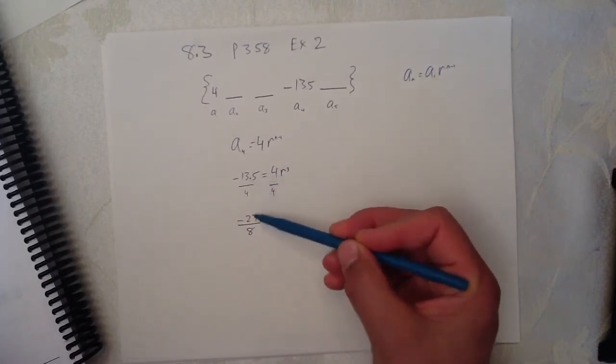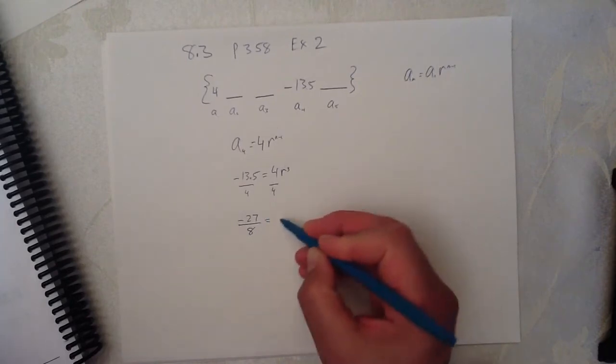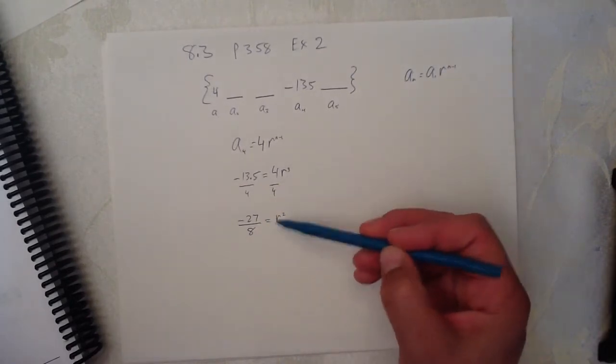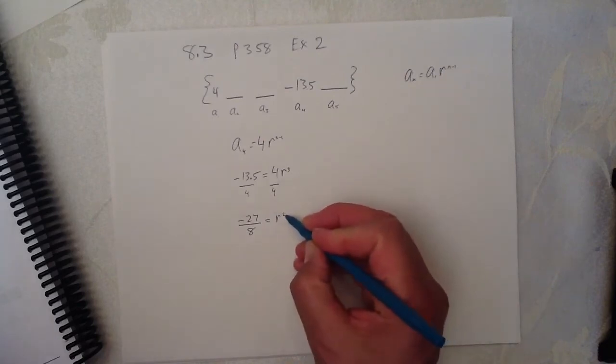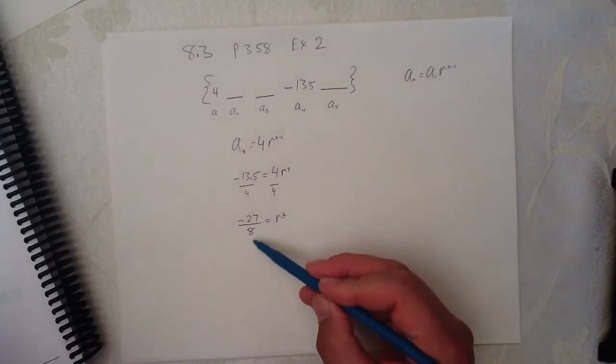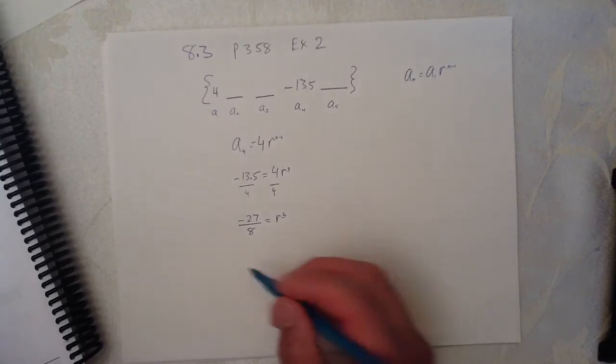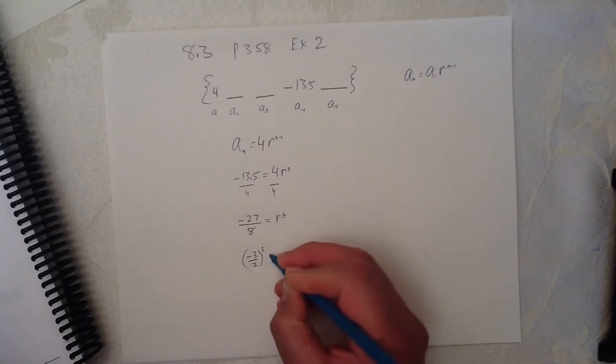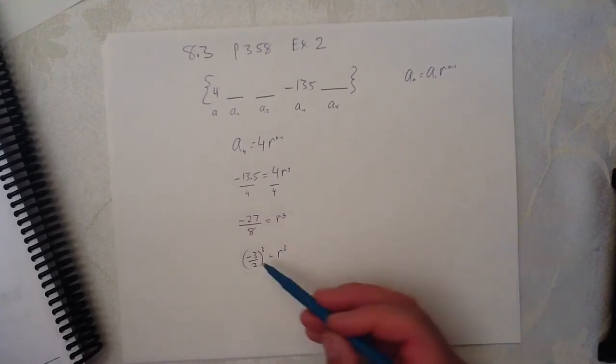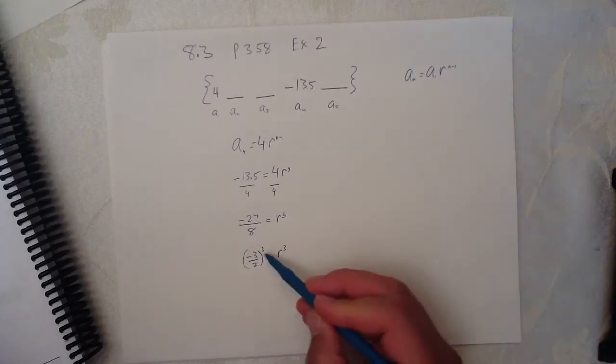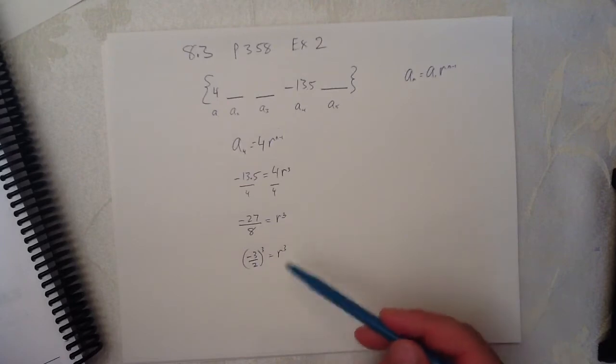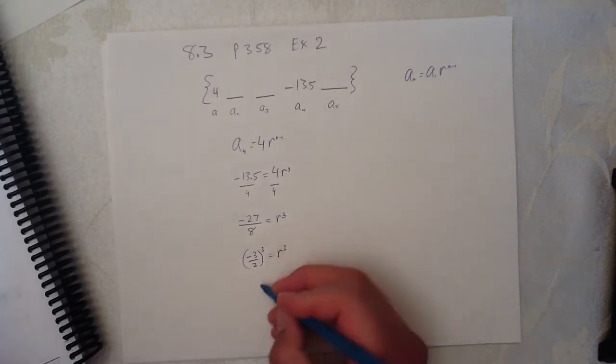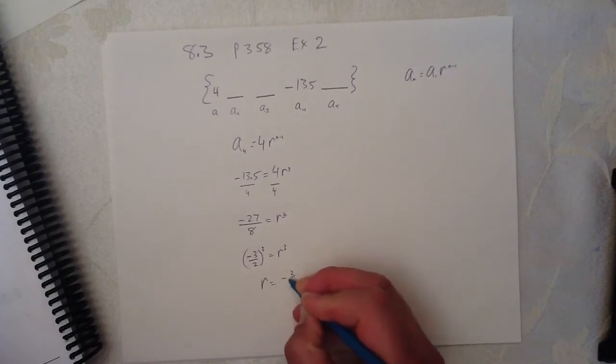Let's represent negative thirteen point five as negative 27 over 8. These are the same. But the reason I do that is because negative 27 over 8, I can easily show is negative 3 over 2 cubed. Because 3 times 3 times 3 is 27, and 2 times 2 times 2 is 8. So, if this is the case, then R equals negative 3 over 2.